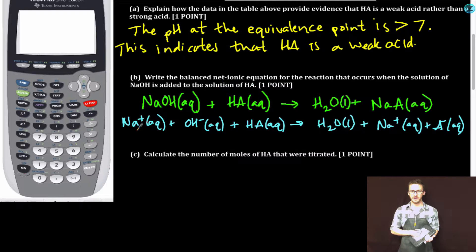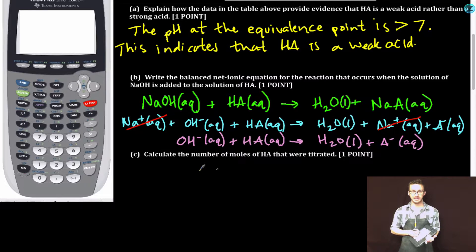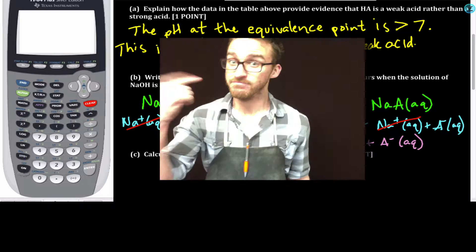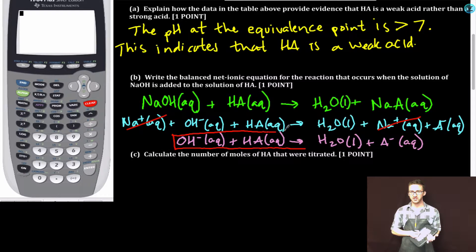Our spectator ion, the sodium ion, appears in the aqueous form on both sides of the equation. Our net ionic equation, the equation without the spectators. Probably a good idea here, because I've written multiple, to box in my final answer to be clear to your grader. The one that you have chosen as your net ionic equation. Don't leave it to chance.